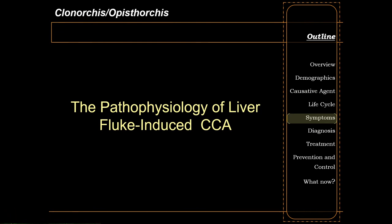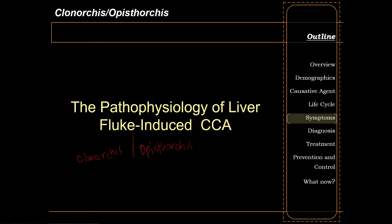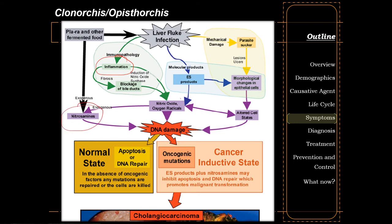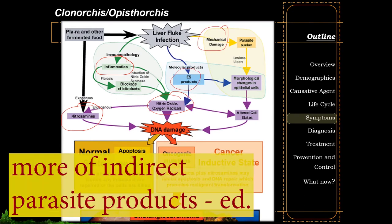Let's discuss the pathophysiology of liver fluke-induced cholangiocarcinoma — which is only associated with Clonorchis and Opisthorchis infections. In a nutshell, cholangiocarcinoma due to liver flukes is caused by epithelial hyperplasia resulting from chronic inflammation, nitrosamines, nitric oxide from inflammatory cells, and mechanical and indirect parasite action.